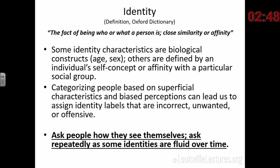Today we'll be talking about identity: the fact of being who or what a person is, a close similarity or affinity with a group. Some identity characteristics are biological, and others are defined by an individual's self-concept. When we categorize people according to what we see — the tone of their skin, for example — if we make assumptions based on that, it can lead us to assign identity labels completely wrongly. We need to always ask, and ask repeatedly, because some identities change over time.